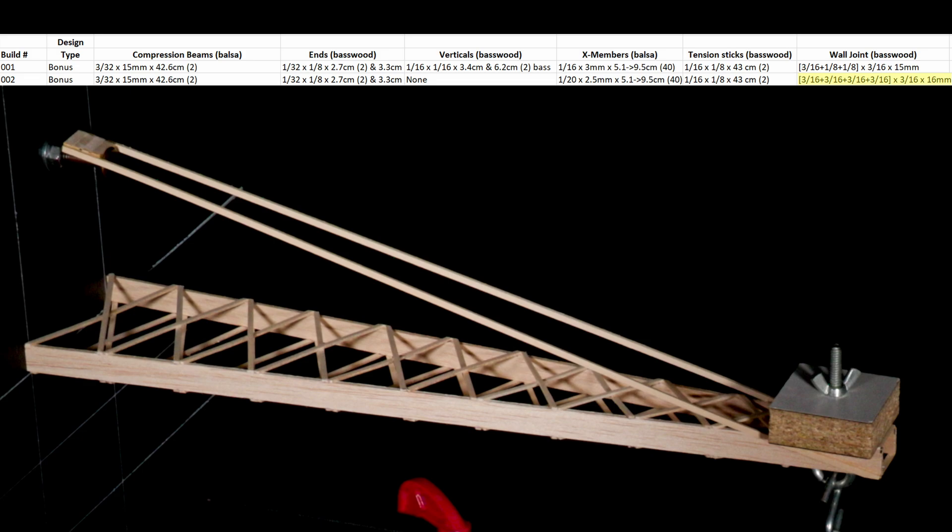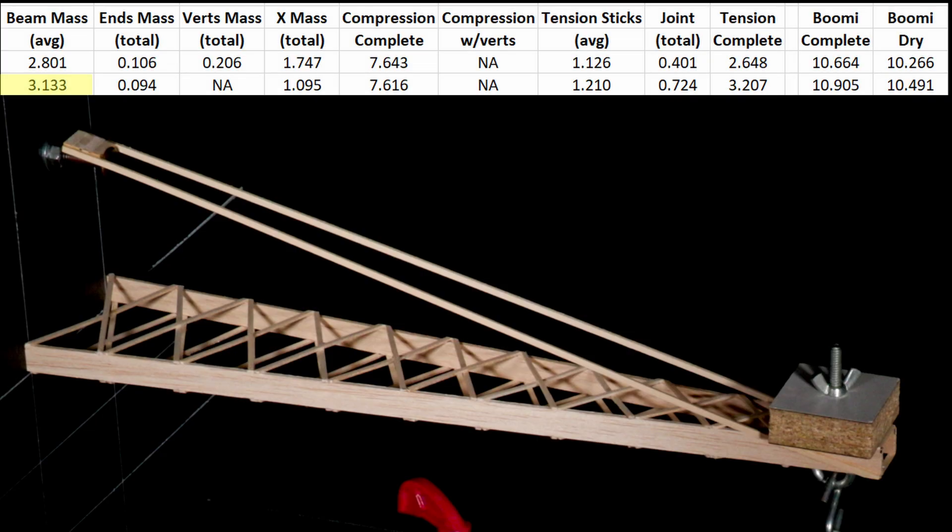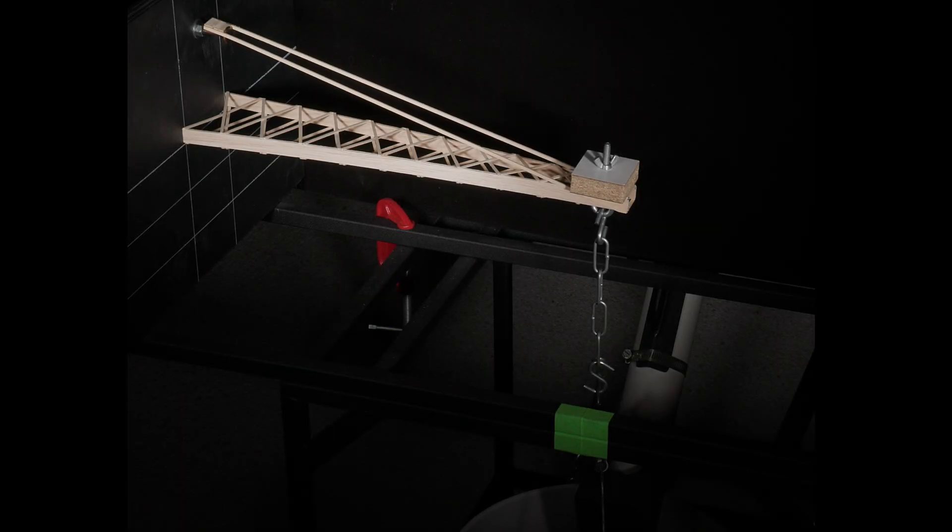This time I used four pieces of 3/16 by 3/16 cut to 16 mm. I used 1/20 sheet balsa cut to 2.5 mm for the cross members, and I decided to try a build with no vertical supports. I have increased the average mass of the compression beams to 3.133 grams, and you can see that the increase in the wall joint mass went from 0.401 grams to 0.724 grams. The completed dry mass Boomi was 10.491 grams, so I'm already starting to creep higher than my desired mass target of 10 grams.